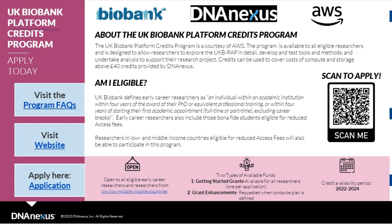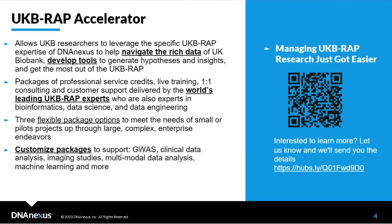If you are an early career researcher or a researcher from a low or lower-middle income country, you can get funds to work directly on the Research Analysis Platform, courtesy of AWS and UK Biobank. These funds cover either getting started on a project or enhancements for a project already underway. If you qualify, you're also eligible for reduced access fees to the tier three genomics data.